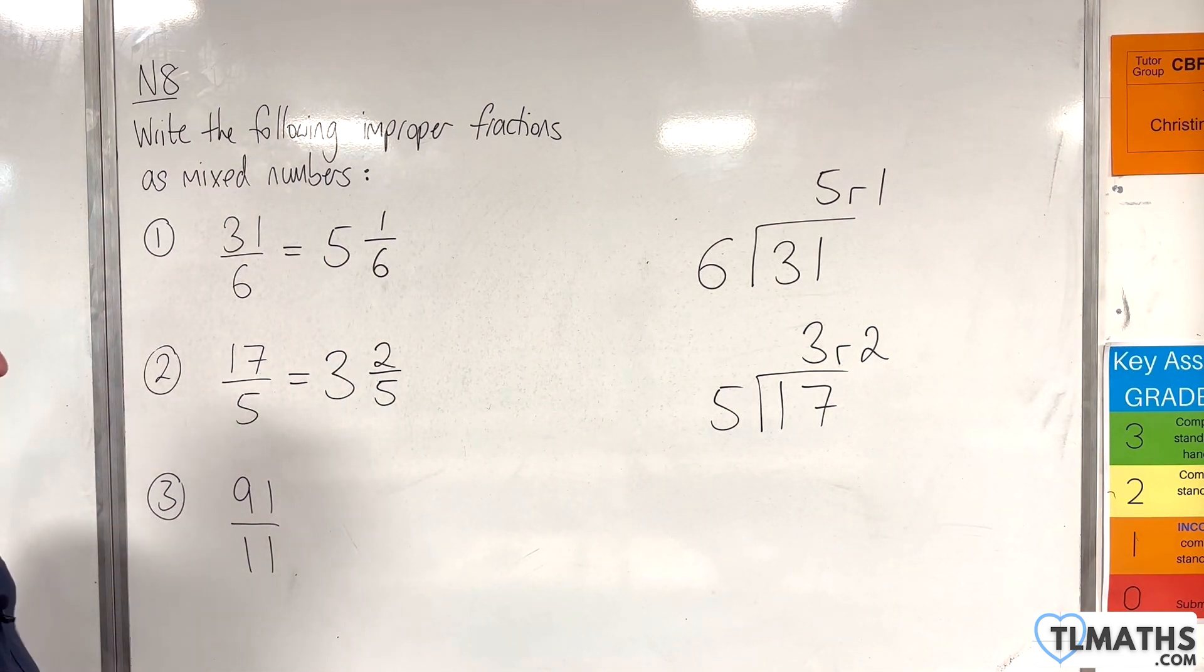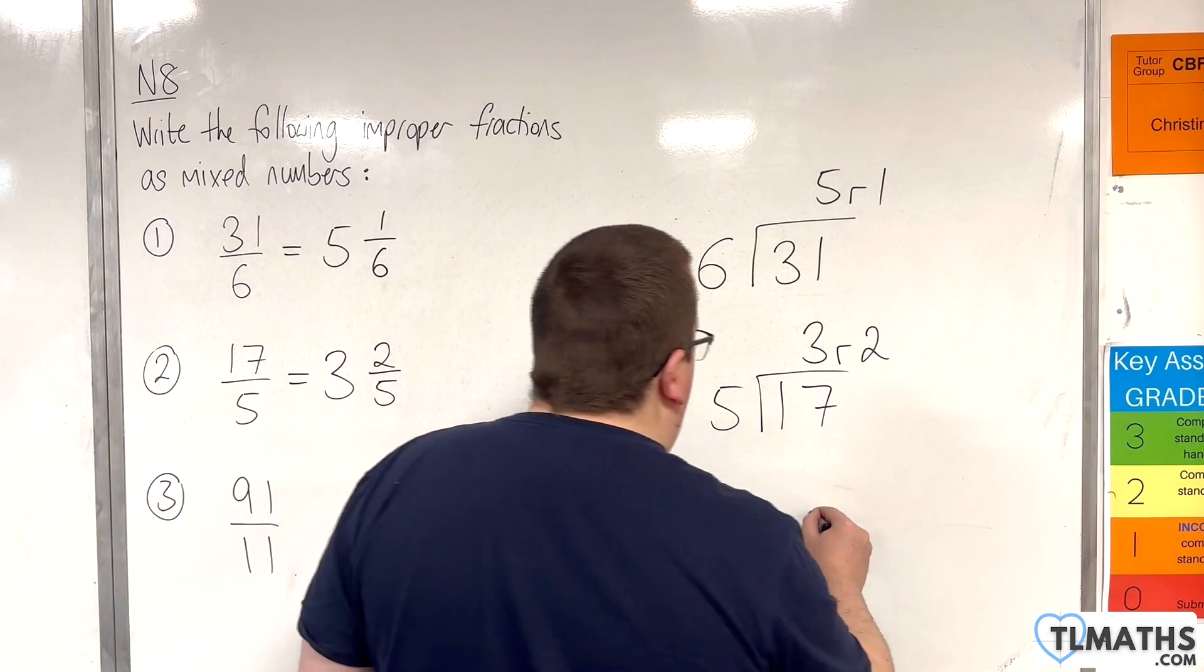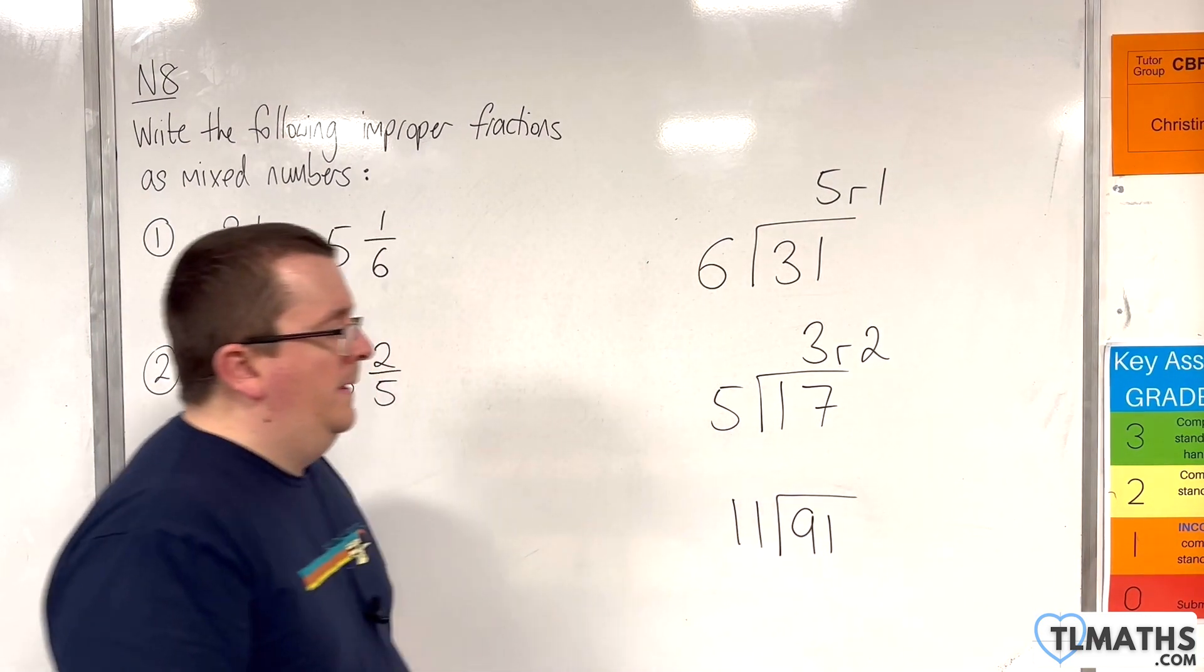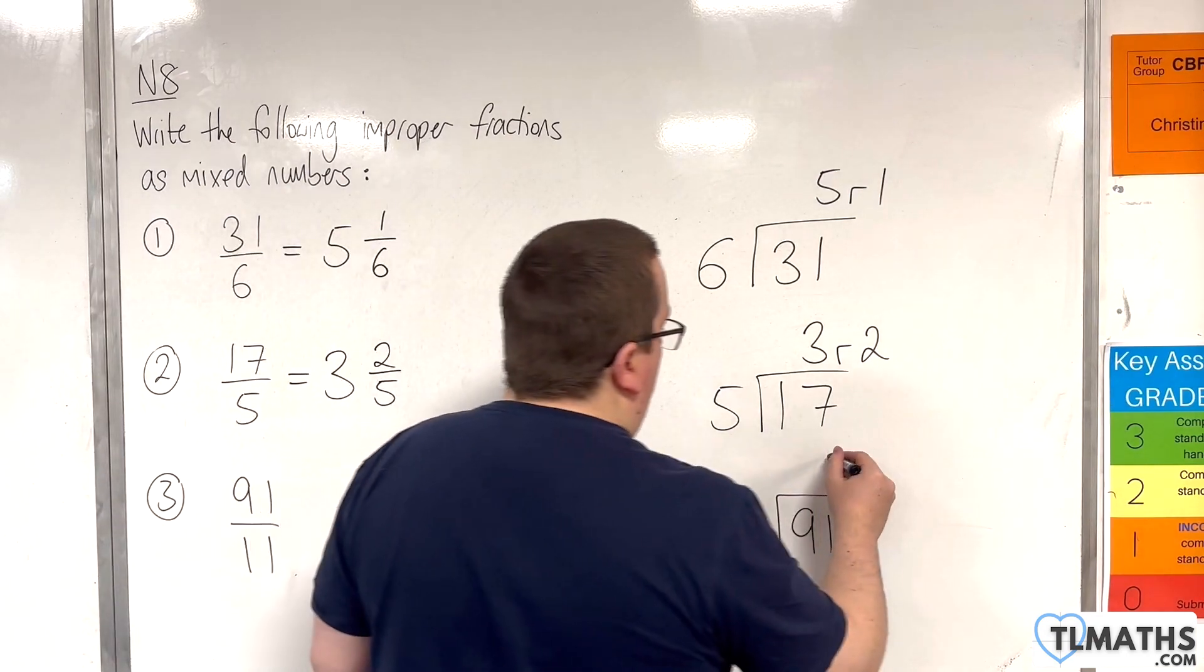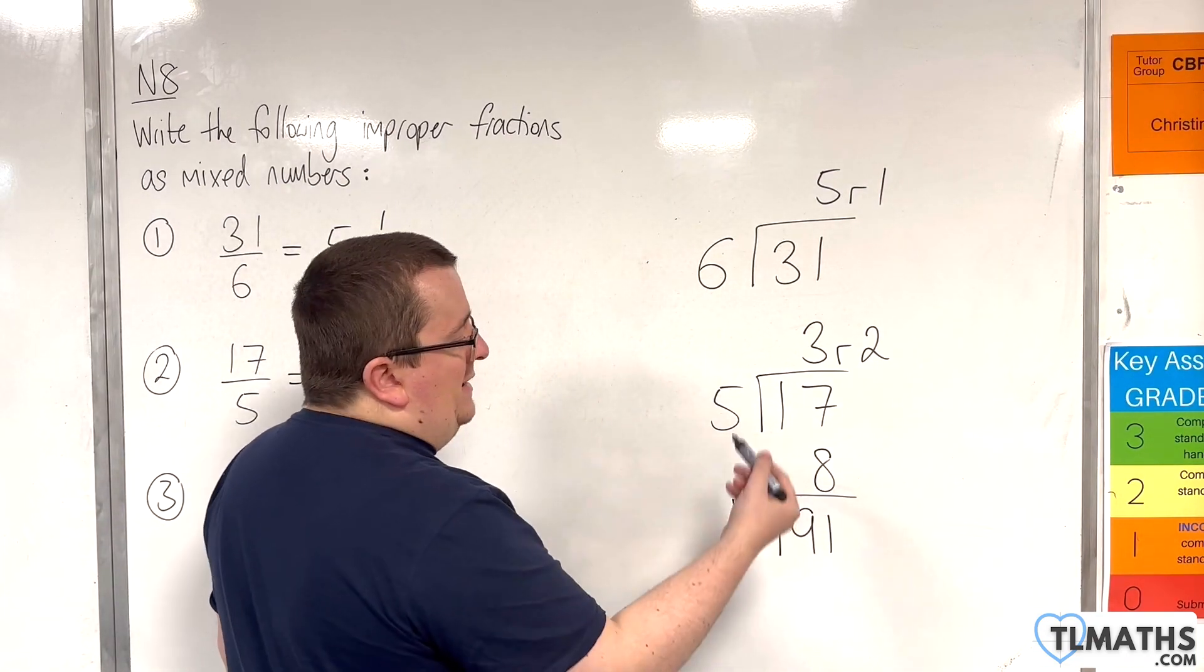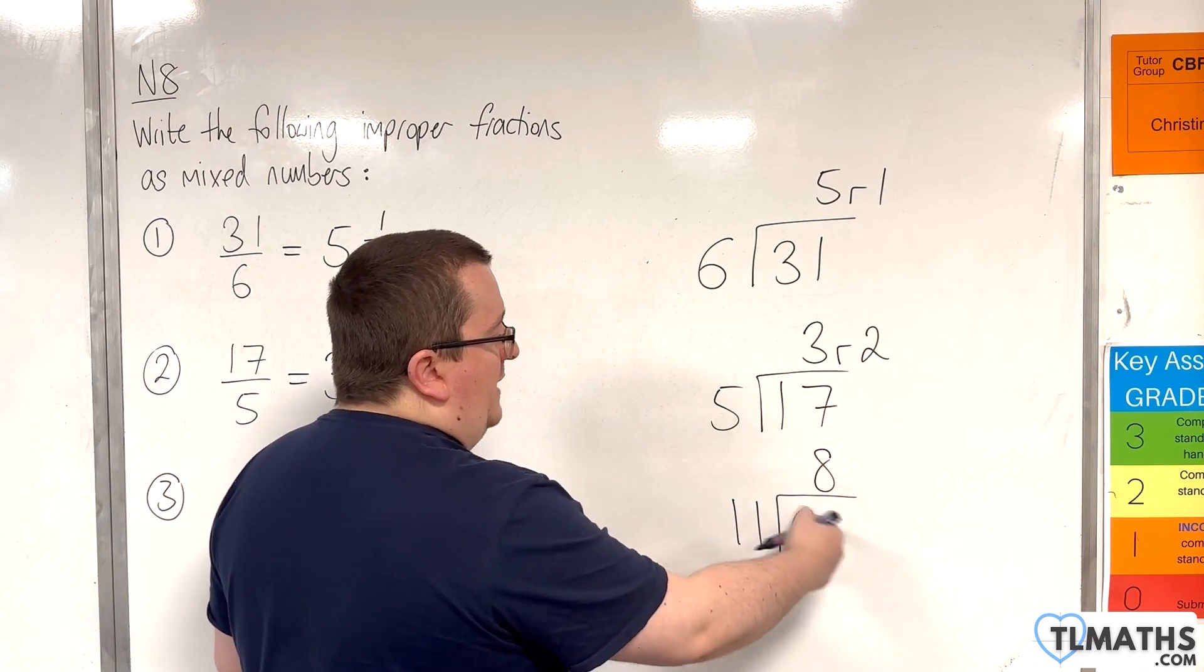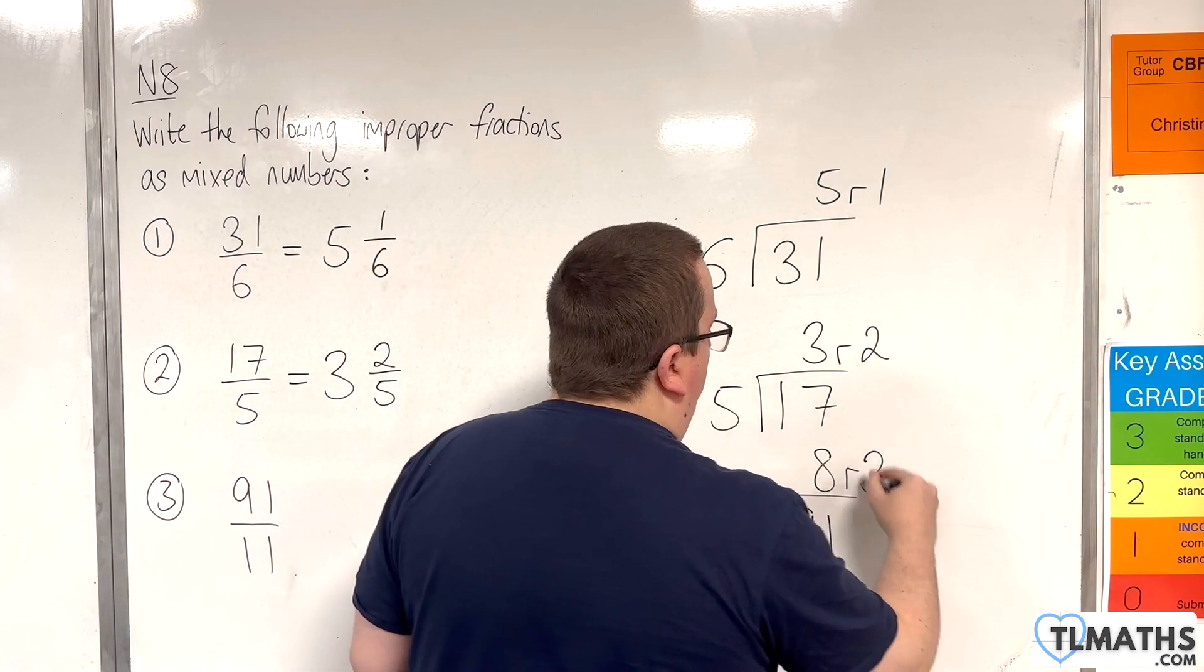And the last one, 91 over 11. We need to determine how many 11s go into 91. That would be 8. 8 11s is 88. So, we have 3 more to add up to 91, a remainder of 3.